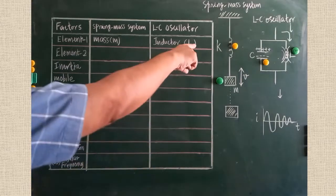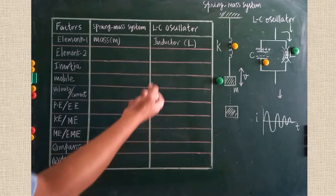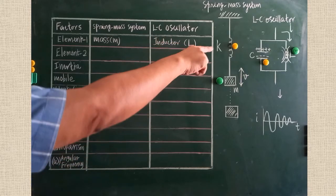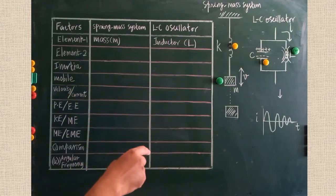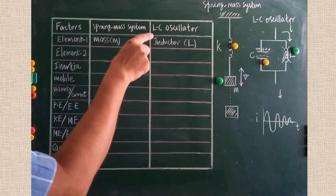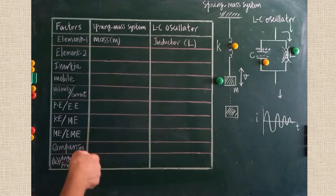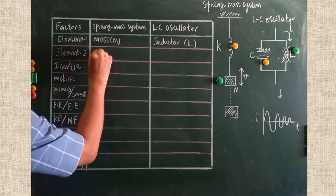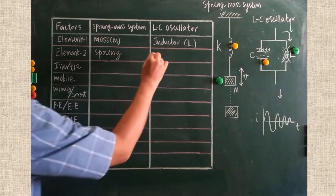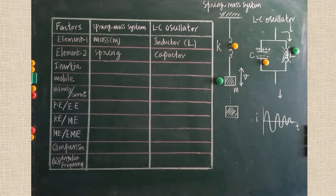One more element is the spring. In the spring, energy is stored up — if the mass is pulled, energy is initially stored in the spring. Similarly, to create electromagnetic oscillation, charges must first be stored in the capacitor. Therefore, the spring can be compared with the capacitor. So spring is compared with capacitor.